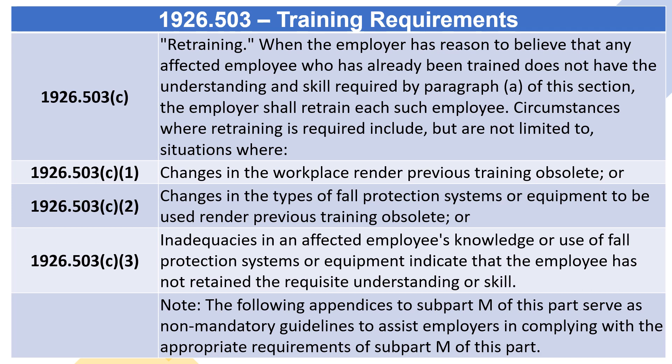1926.503(c) — Retraining. When the employer has reason to believe that any affected employee who has already been trained does not have the understanding and skill required by paragraph (a) of this section, the employer shall retrain each such employee. Circumstances where retraining is required include but are not limited to: 1926.503(c)(1) — changes in the workplace render previous training obsolete; 1926.503(c)(2) — changes in the types of fall protection systems or equipment render previous training obsolete; or 1926.503(c)(3) — inadequacies in an affected employee's knowledge or use of fall protection systems or equipment indicate that the employee has not retained the requisite understanding or skill.